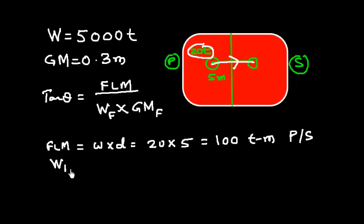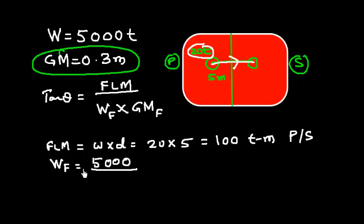Now let's find out what is WF, that is final displacement. So initial displacement is 5000 and we shifted something. That means we didn't load anything or discharge anything, so it remains the same. Now GM is already given, which is 0.3 meters.